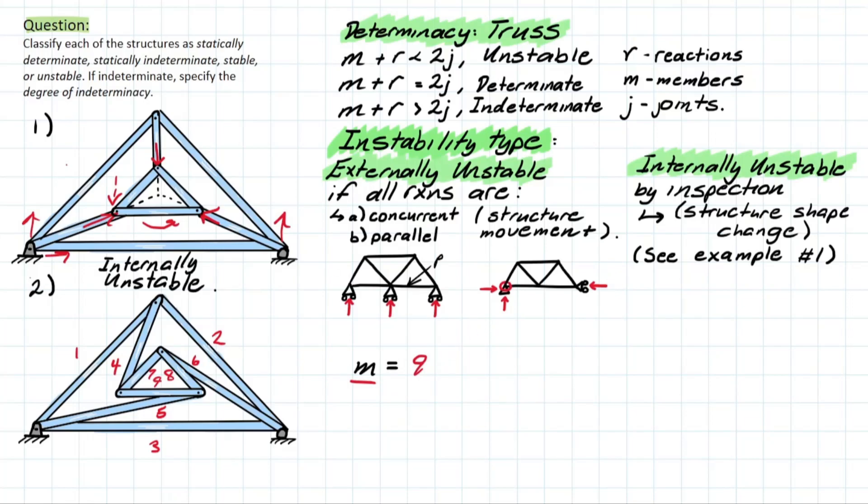Then, let's use a different color to circle our joints. We have 1, 2, 3, 4, 5, 6. So if we draw a line here and label this J, we're going to have 6 joints. The final thing we need is the reactions. We know these pretty well. We have a pin here and a roller. So r is going to equal 3.